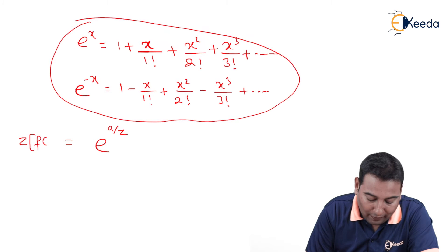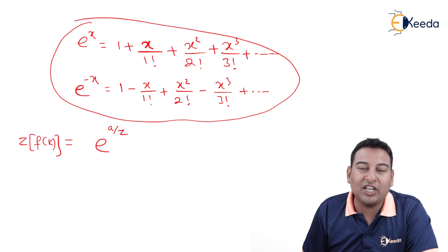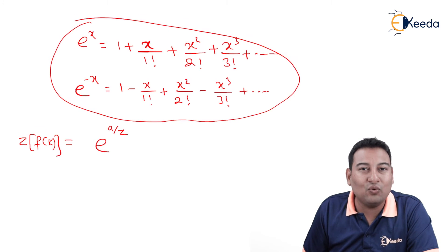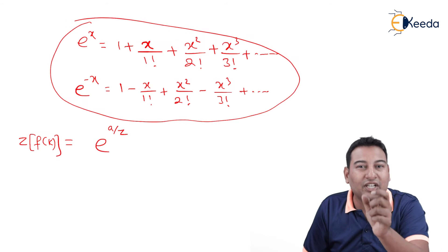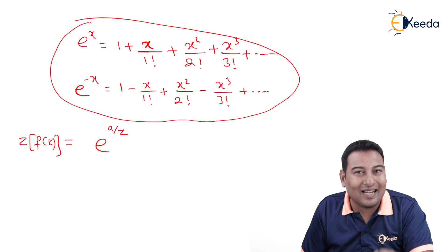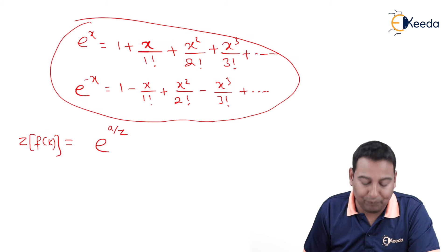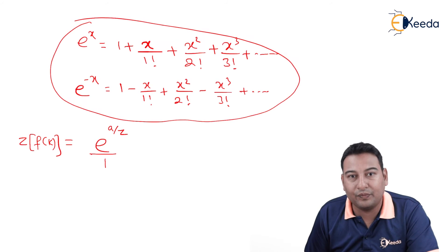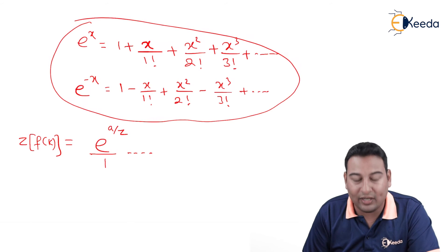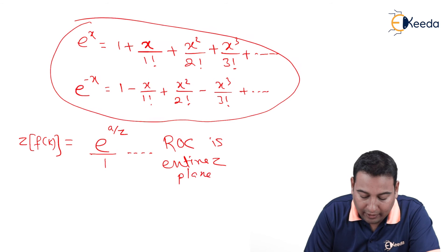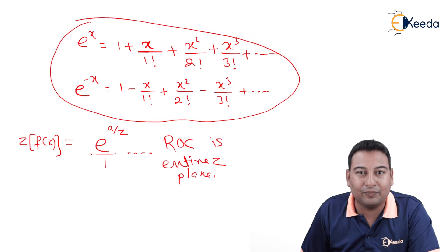This is the Z-transform of f(k): e^(a/z). For the ROC — if the denominator were z minus a, we'd say mod z greater than a; if a minus z, mod z less than a. But here we have no denominator, so there is no restriction, and the ROC is the entire z-plane. Hope you understood the problem, thank you.